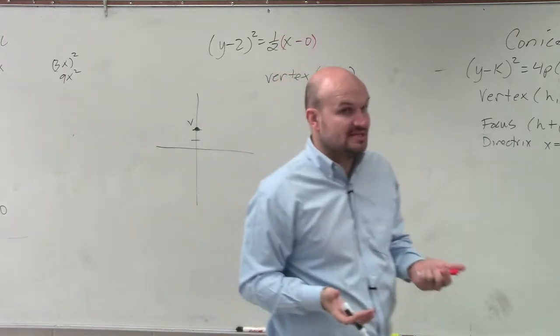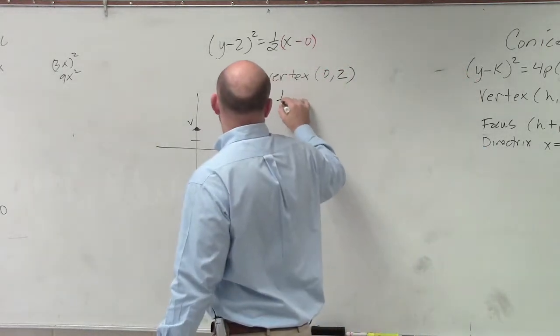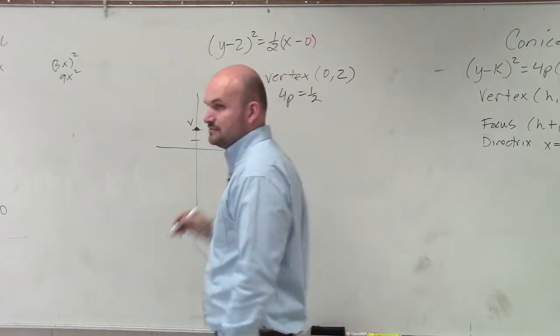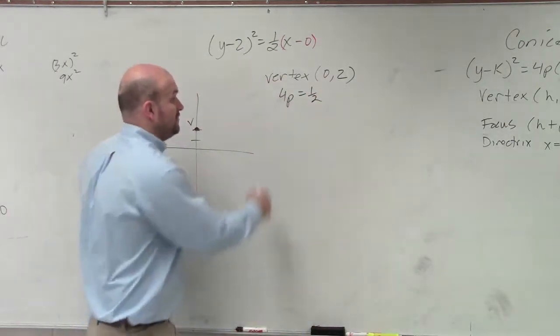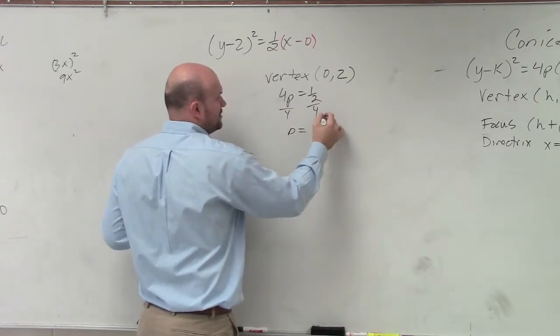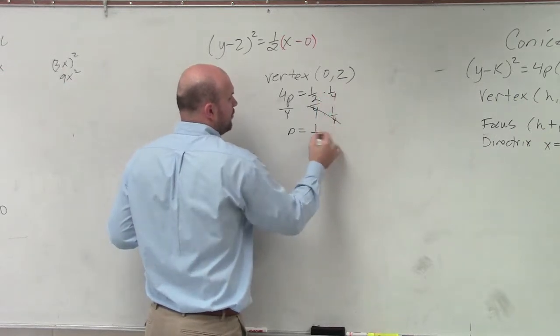So now we need to figure out what the focus is. To find the focus, I need to figure out what p is. I have 4p equals 1/2. To solve for p, I have to divide by 4. You can multiply by the reciprocal if you want, and you get 1/8.